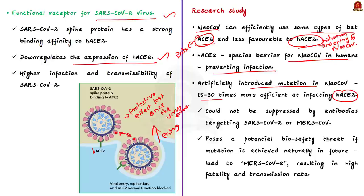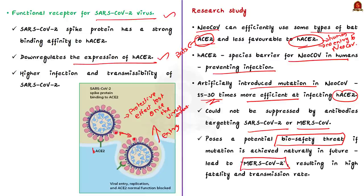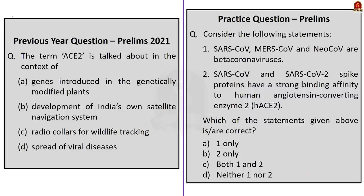However, there is cause for worry: when researchers artificially introduced mutations in NeoCov in laboratory settings, the mutated NeoCov was able to bind to hACE2 — and it was 15 to 30 times more efficient in infecting hACE2. They also found that this mutated form could not be suppressed by antibodies that generally target SARS-CoV-2 and MERS-CoV. So this poses a potential biosafety threat. If in the future there is a natural mutation in NeoCov that increases its ability to bind to hACE2, it may result in both high fatality and very high transmission rate.